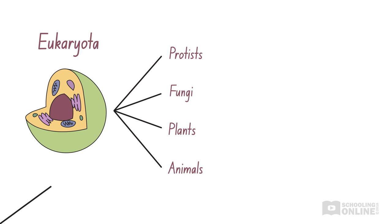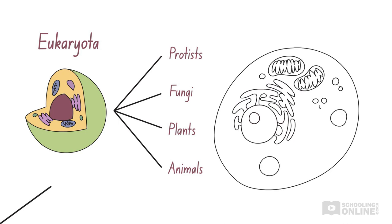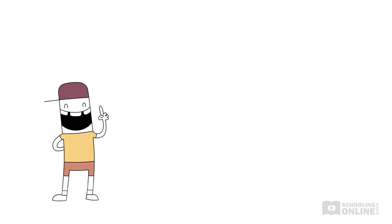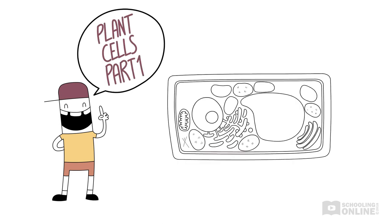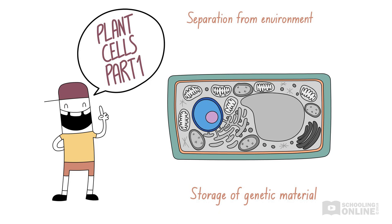Eukaryotes are found in diverse environments and are capable of sexual reproduction. A large portion of the HSC biology course is devoted to studying eukaryotes, particularly plants and animals, so it's important to understand plant cells in detail. Over the three lessons on plant cells, we'll look at the structure and function of plant cell components, including the cell wall and cell membrane.